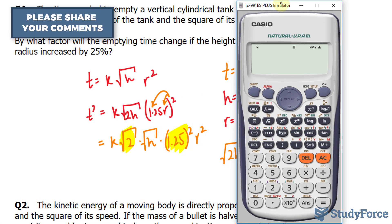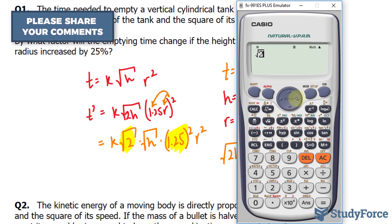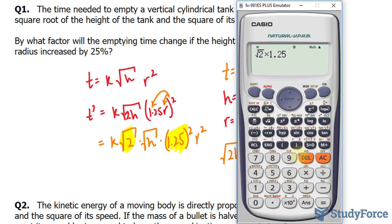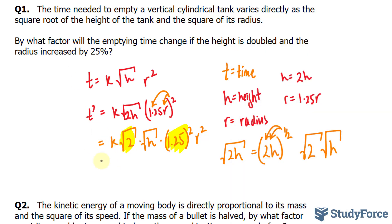Using my calculator, I'll write down the square root of 2 times 1.25 to the power of 2. This gives me approximately 2.21, and everything that's left over, this k, the square root of h and r squared remains there.